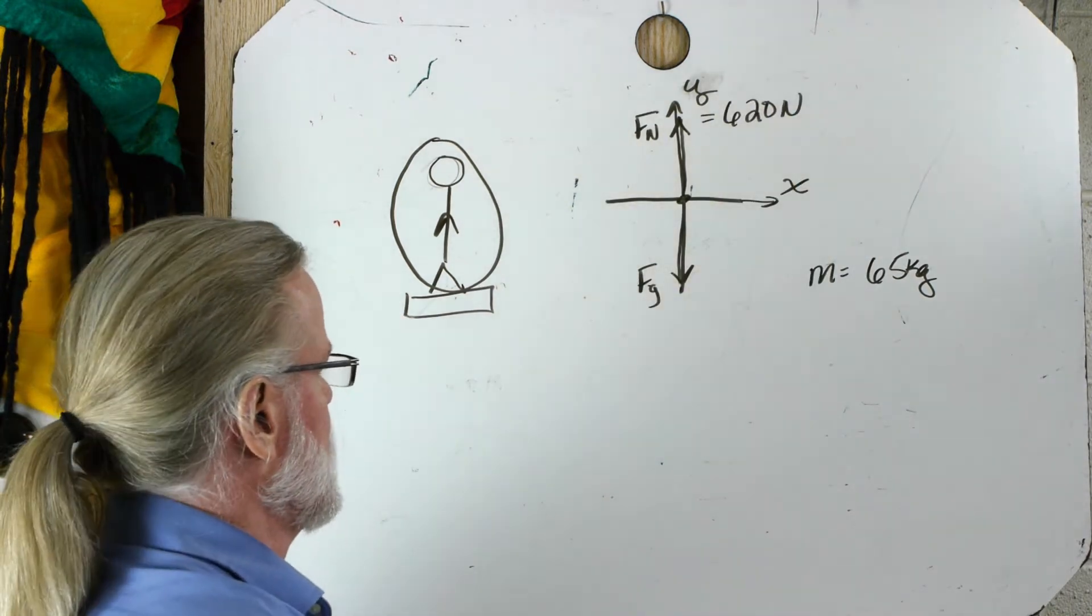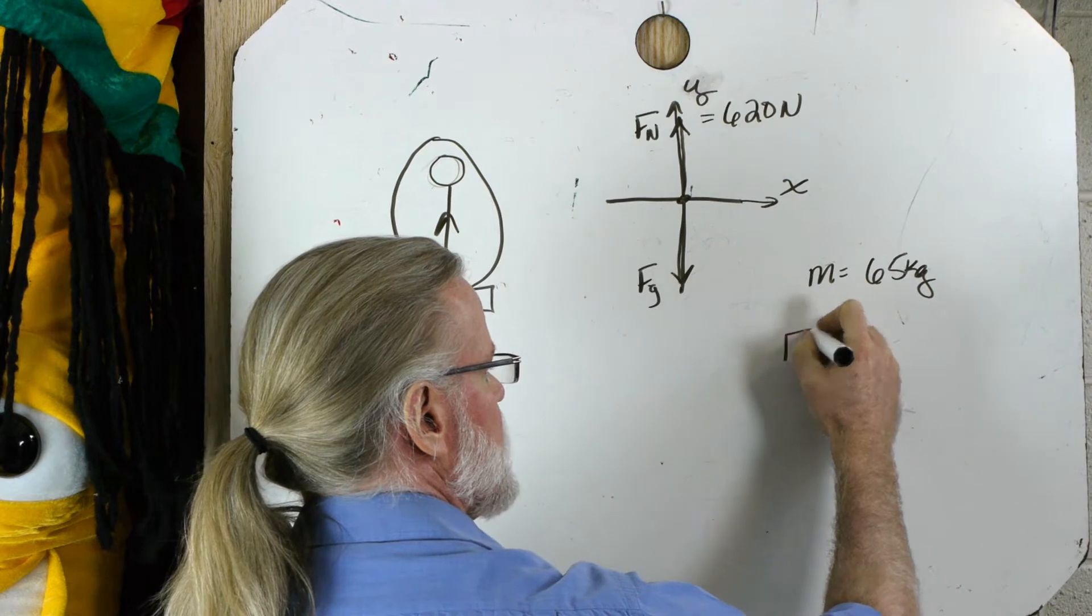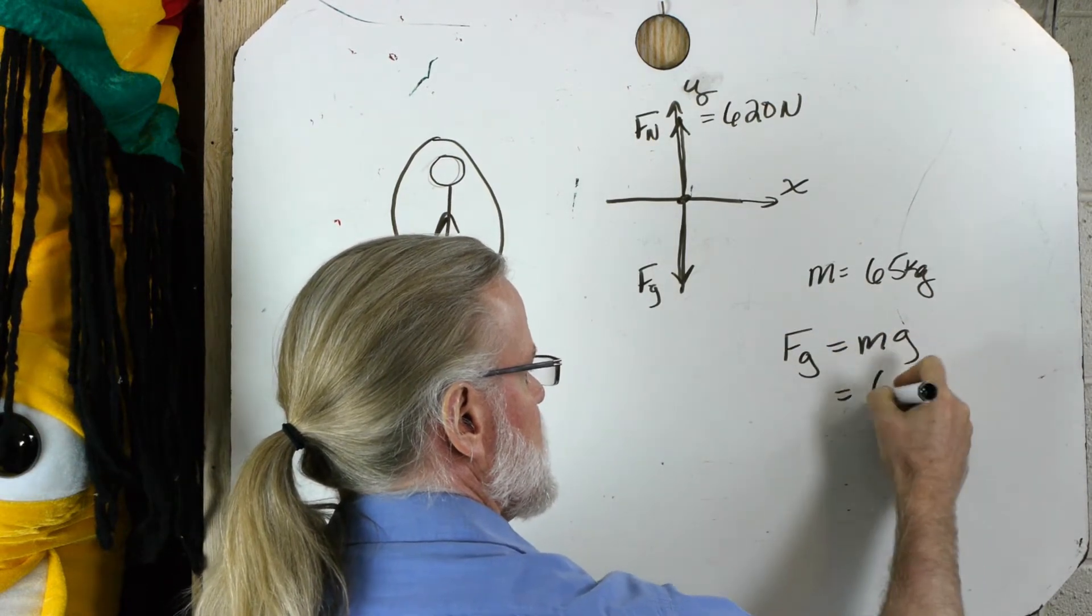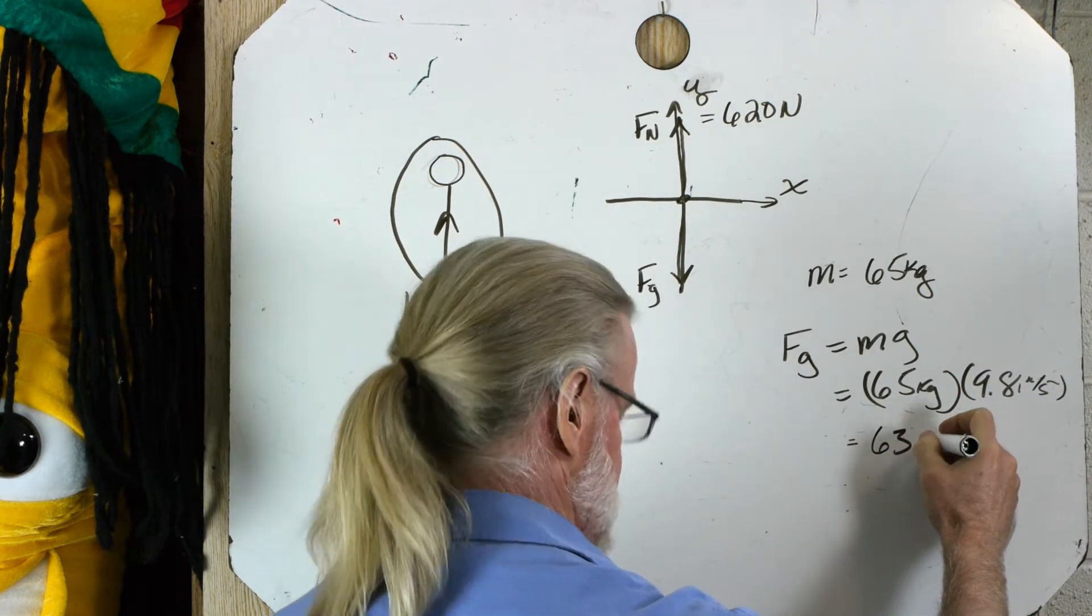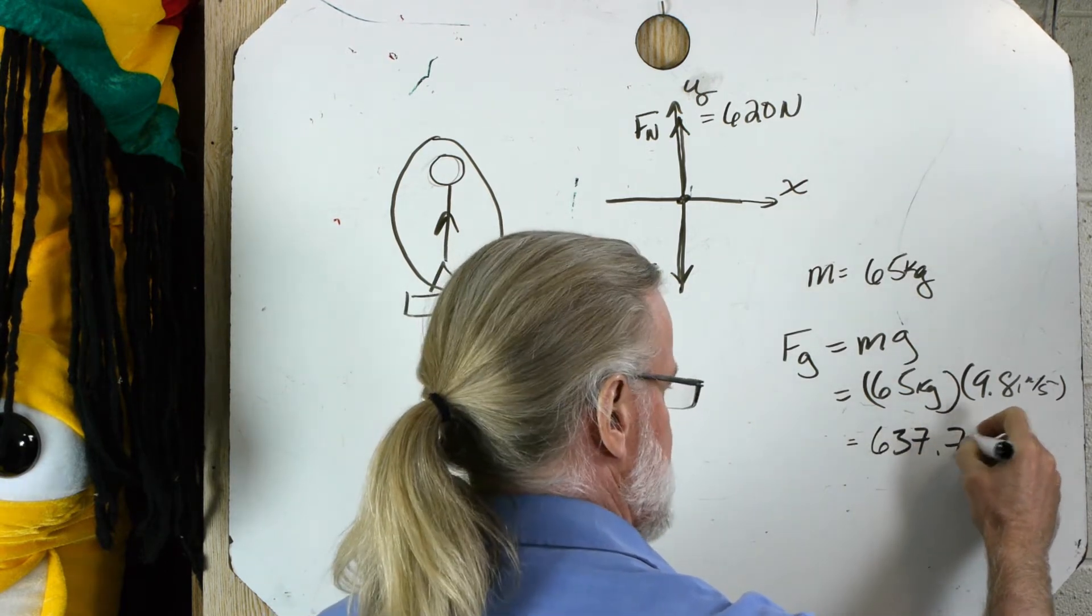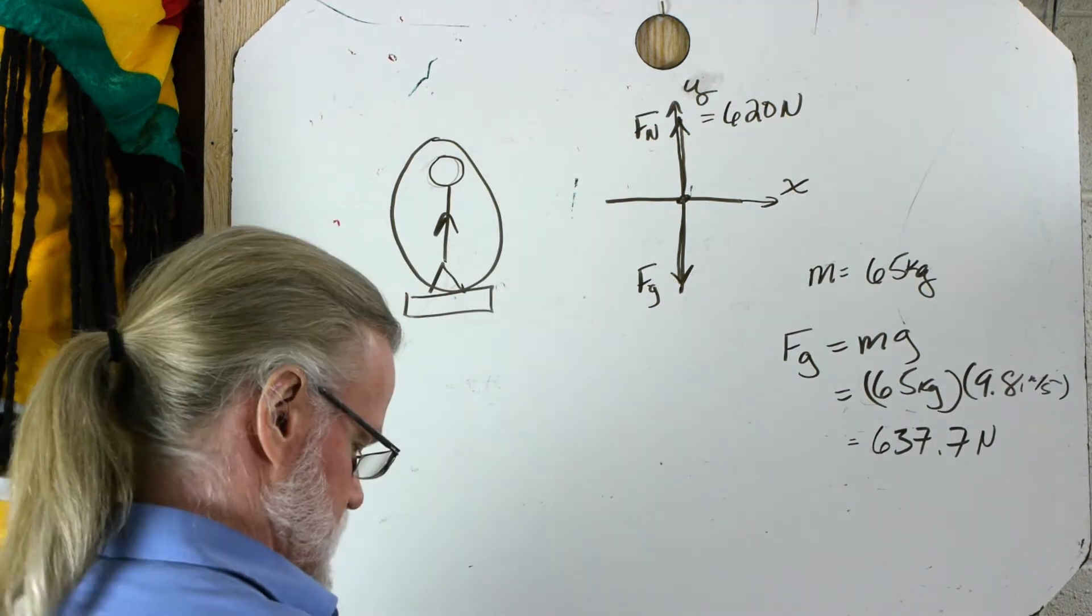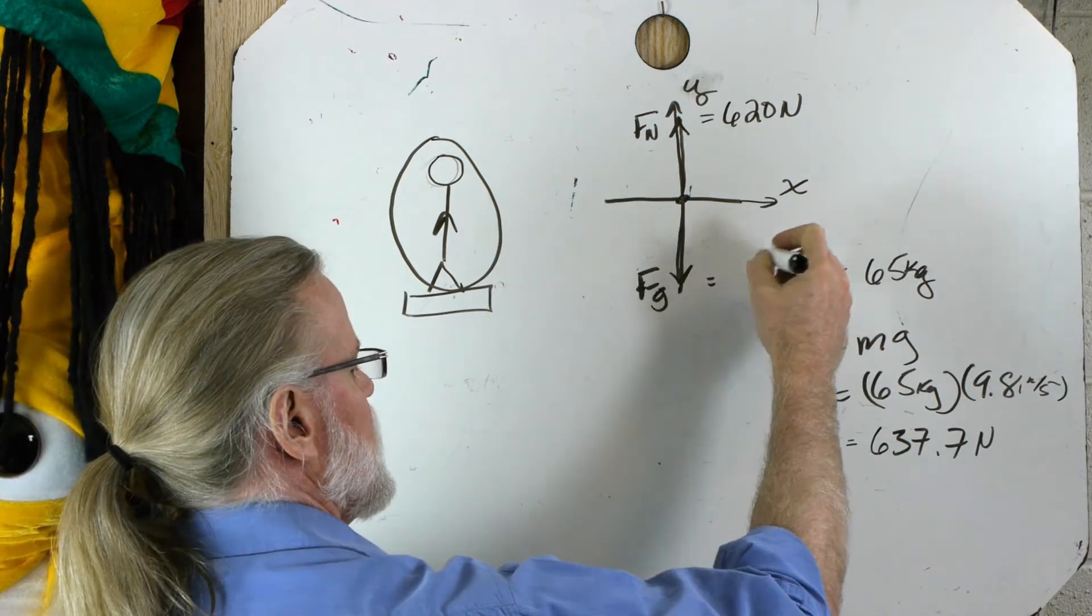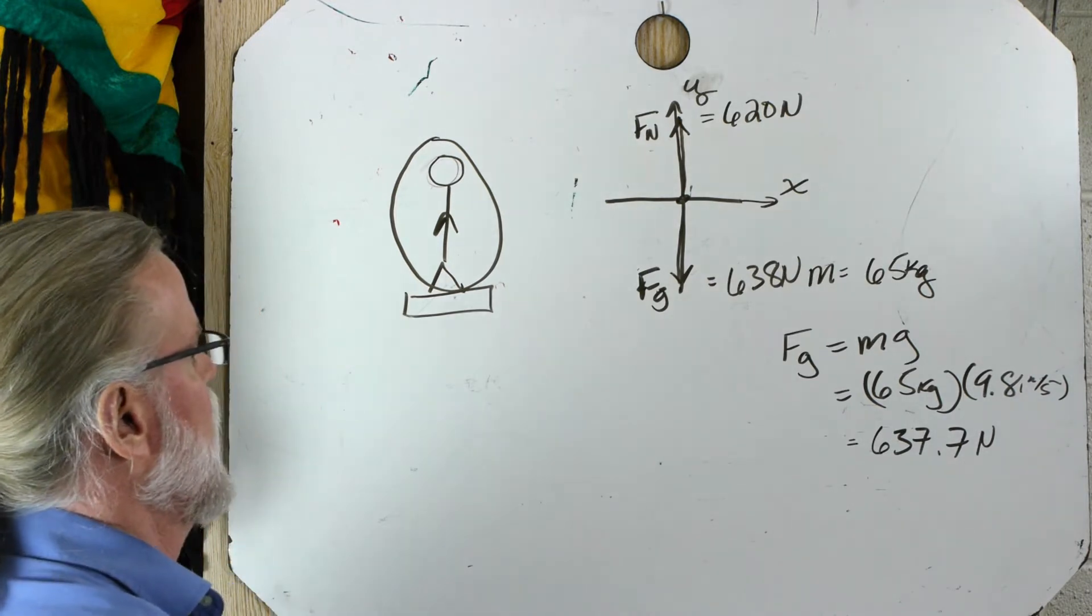And we can calculate the weight. The weight of this person is Fg equals mg, which is 637.7 newtons. I have some extra digits there. So that is the force of, we'll say 638 newtons. So this one's bigger.